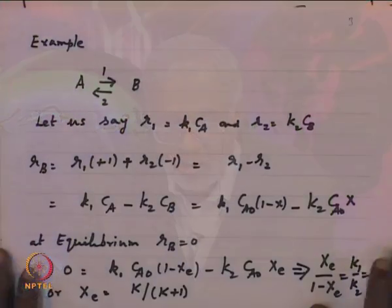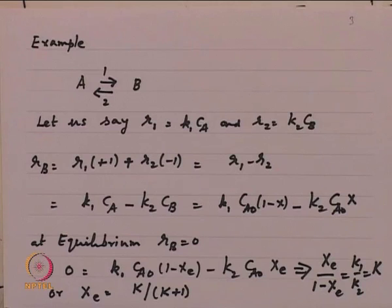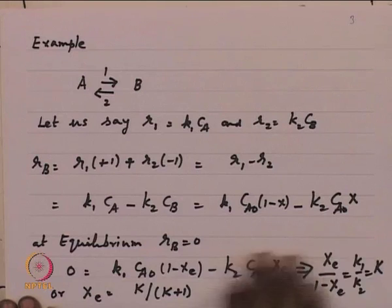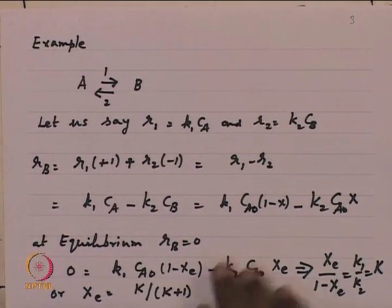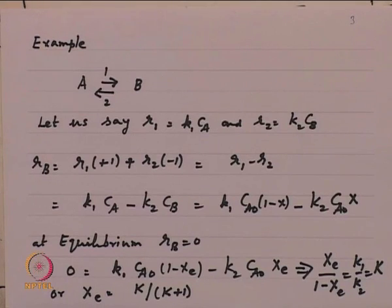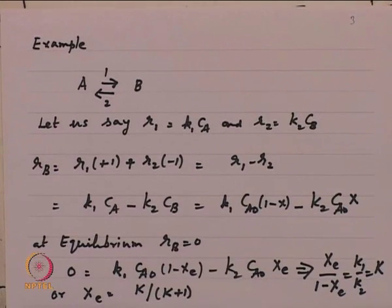With this, let us look at one example. Consider a simple case of A going to B, where we say it is a first order representation for R₁ and R₂, the two forward and backward reactions. The rate of formation of B is written as k₁C_A minus k₂C_B, and in terms of conversion as k₁C_A₀(1−x) minus k₂C_A₀x. At equilibrium, R_B is zero, so the equilibrium conversion is simply K/(K+1).